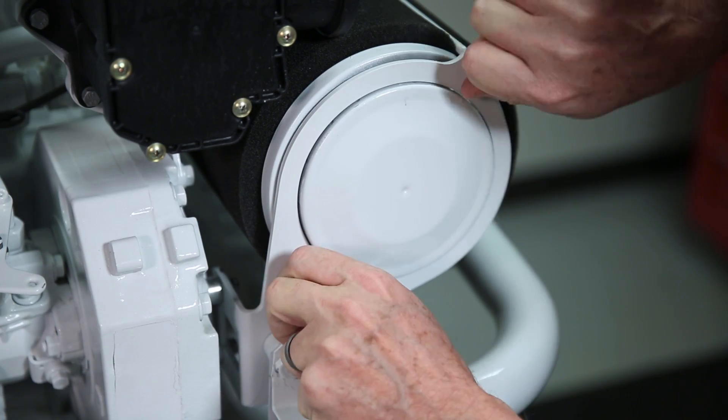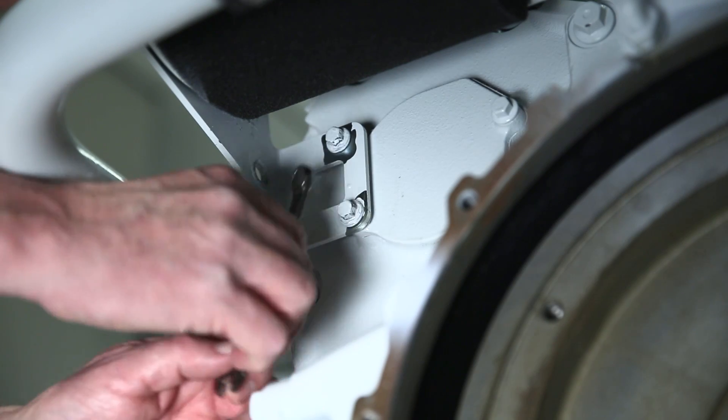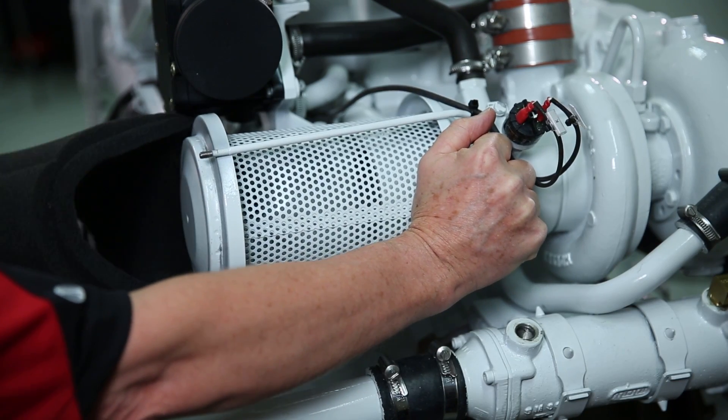Remove the two nuts securing the air filter supports to the mounting bracket. Remove the screw securing the mounting bracket to the engine. Carefully remove the air filter element.